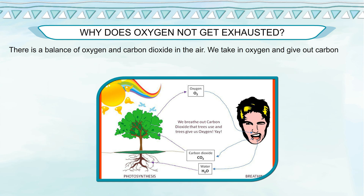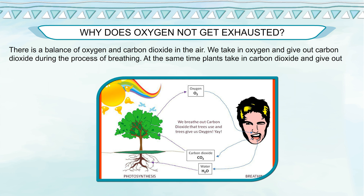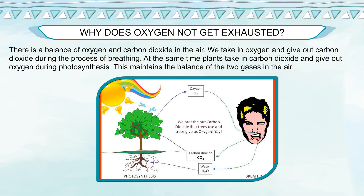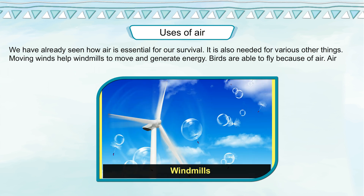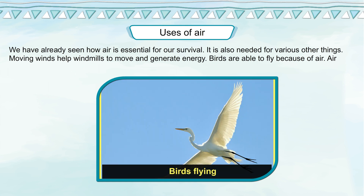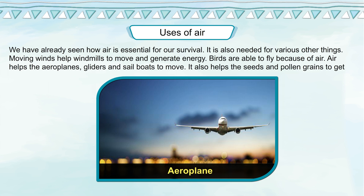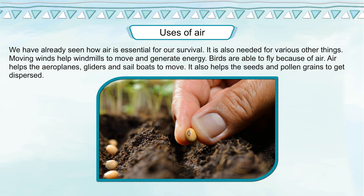We take in oxygen and give out carbon dioxide during breathing. At the same time, plants take in carbon dioxide and give out oxygen during photosynthesis. This maintains the balance of the two gases in the air. Air is also needed for various other things: moving winds help windmills generate energy, birds are able to fly because of air, and air helps aeroplanes, gliders, and sailboats to move. It also helps seeds and pollen grains to get dispersed.